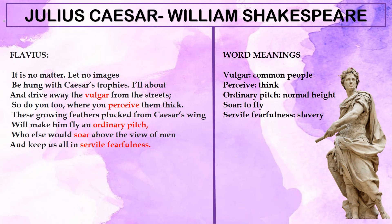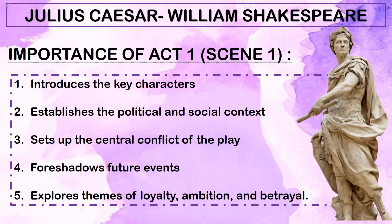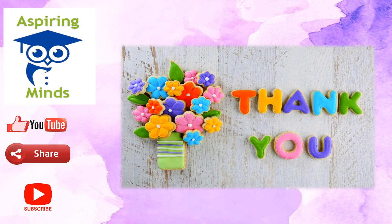In summary, Act One, Scene One of Julius Caesar accomplishes several things: it introduces the key characters, establishes the political and social context, sets up the central conflict, foreshadows future events, and explores themes of loyalty, ambition, and betrayal. This scene lays the foundation for what is to come. The importance of this scene will be discussed in an upcoming video. Thank you for watching — do stay tuned for more topics related to Julius Caesar by William Shakespeare!